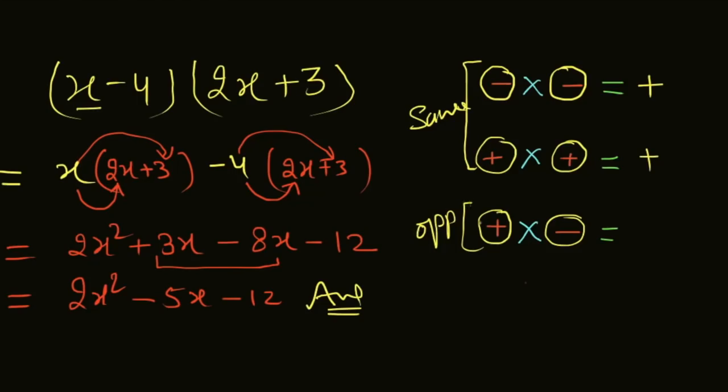Opposite signs multiply - like plus here and minus here - it's always minus. You have to keep this in mind when you're multiplying. Right, students?